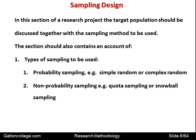It should also contain an account of the types of sampling to be used — for example, probability sampling, simple random sampling, or more complex random sampling techniques. A random sample is where each item selected from the population has an equal probability of being selected, so there's no bias in the selection. We also have non-probability sampling, quota sampling, or snowball sampling. These are matters of convenience — they're cheap but not very scientific, and the results cannot be relied upon very strongly.